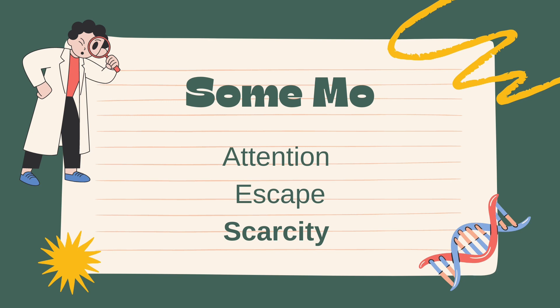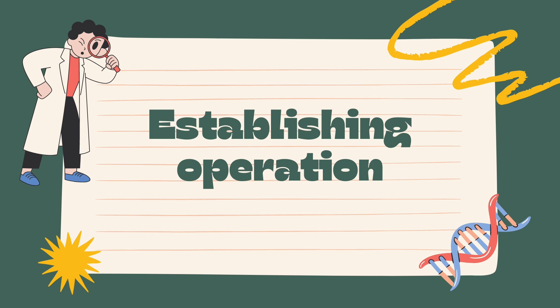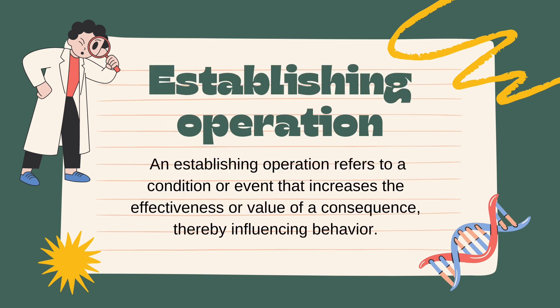Motivating operations are at the core of our drive and determination. They shape our behavior and push us towards success. The next term is EO — establishing operation. An establishing operation refers to a condition or event that increases the effectiveness or value of a consequence, thereby influencing behavior. For example, imagine you're really hungry and your favorite meal is being served. An establishing operation can also make a consequence more aversive or less desirable, such as when you haven't slept well and are feeling tired and fatigued.